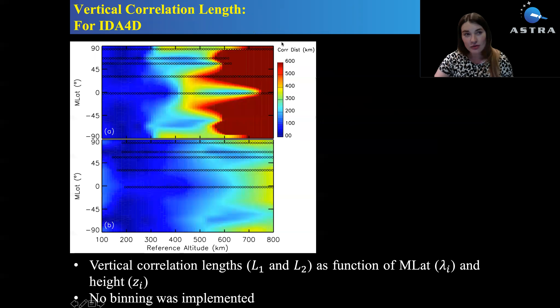For the ionospheric data assimilation, we are interested in vertical correlation length distribution as a function of magnetic latitude. Here the dots show the location of incoherent scatter radars and x-axis is the reference altitude. The color represents the correlation distance. I used the linear interpolation in between this data to find the distribution as the function of magnetic latitude.